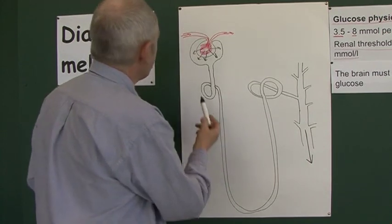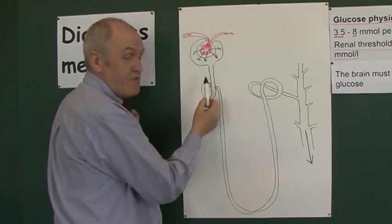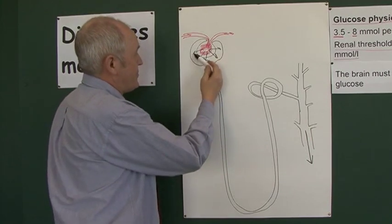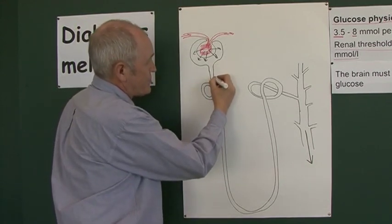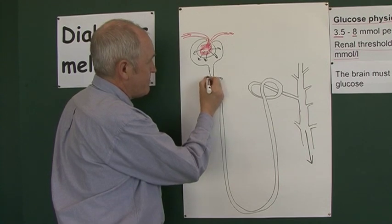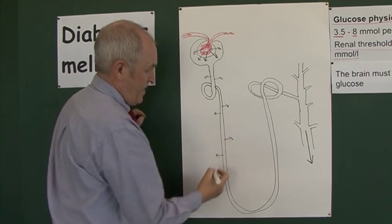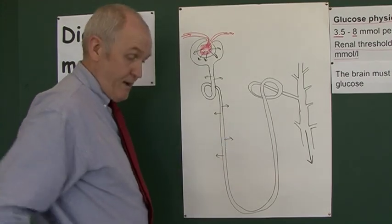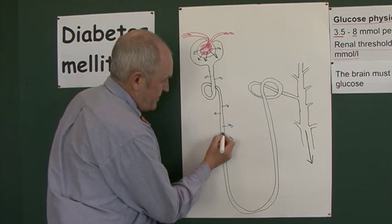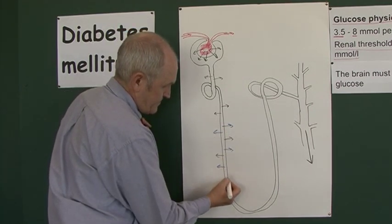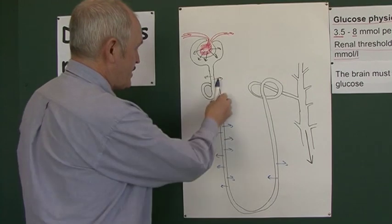Blood comes in and is filtered, so water, sodium, potassium, urea, and glucose are all filtered through into the glomerular filtrate. As the glomerular filtrate goes through the nephron, water is reabsorbed back into the blood, and the glucose is also reabsorbed back into the blood. So as we go along, a lot of the water is taken out and the glucose is taken out — the glucose is removed from the filtrate.